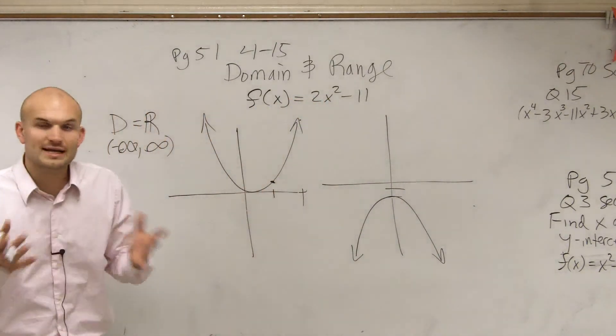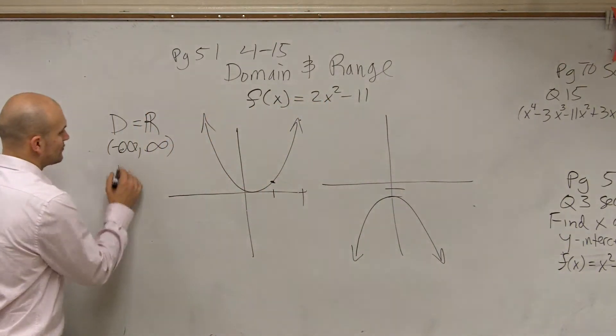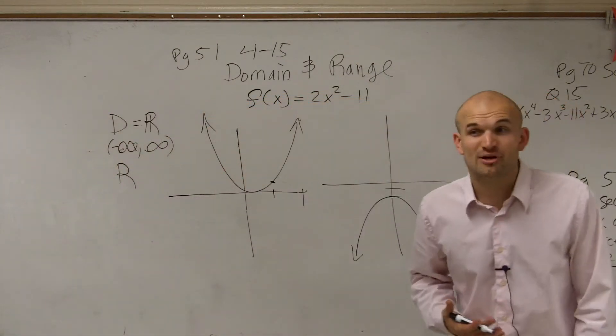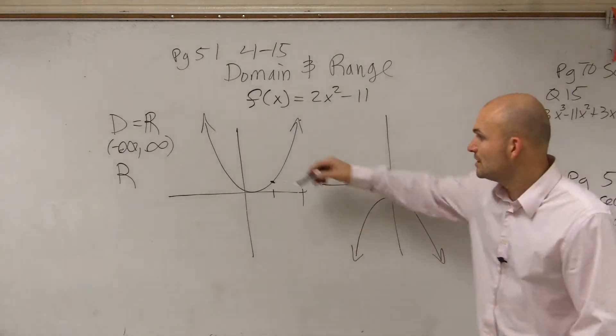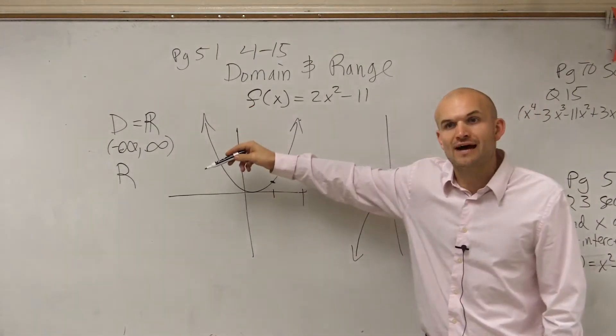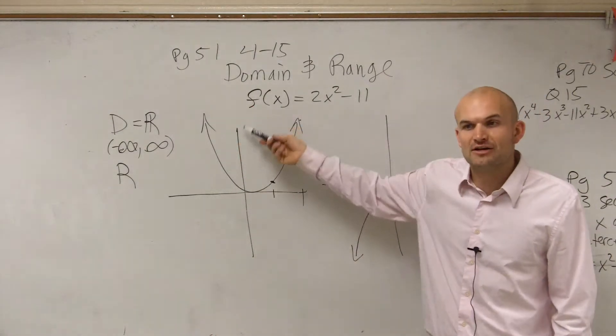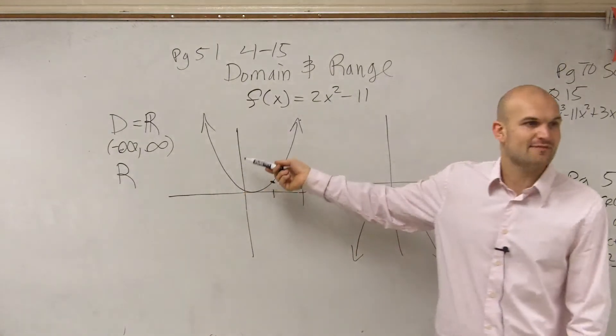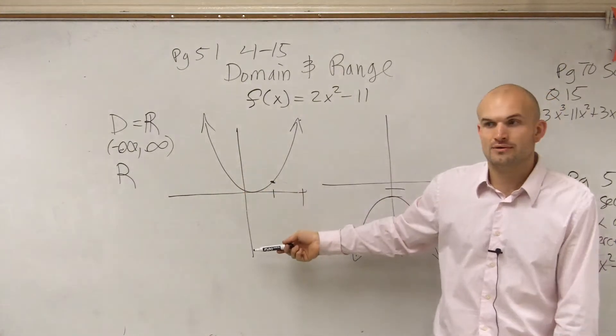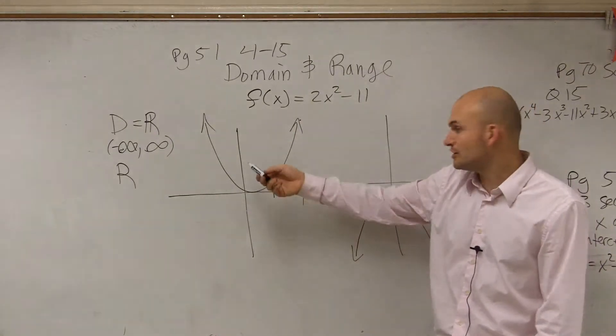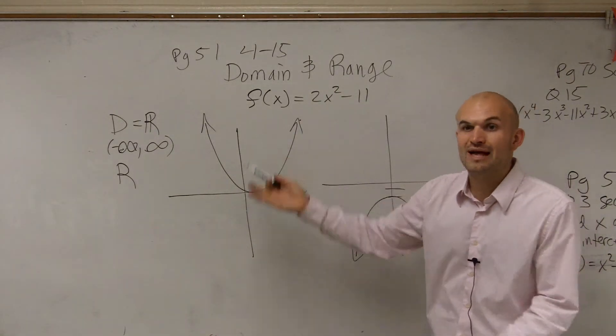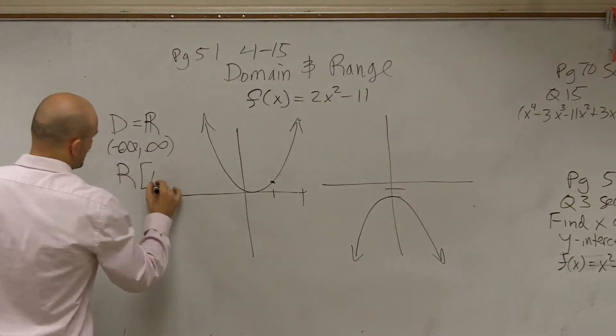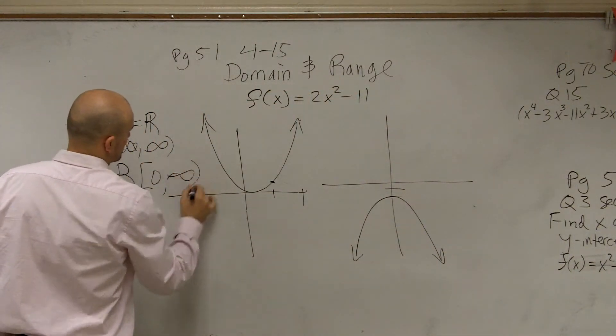Now when looking at the range, now dealing with the range, the range we're not looking at the input values. Now the range we're looking at the output values, which is going to be the y values of your graph. So let's look at all the y values of my graph. No matter what value I pick for x, am I ever going to have a y value that's less than 0? No. These y values, the lowest point it goes to is 0, and then it goes up. So my range is from 0 to infinity.